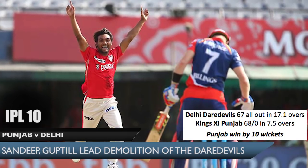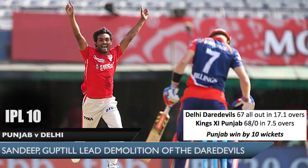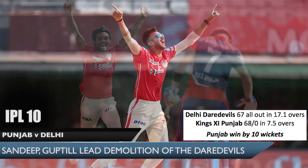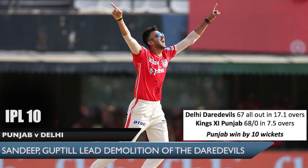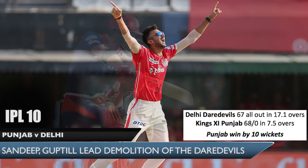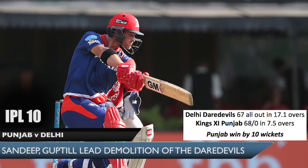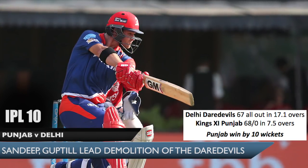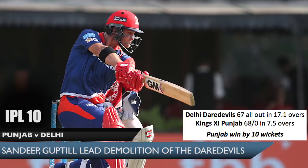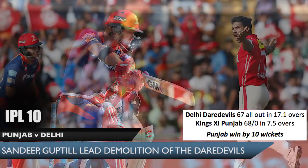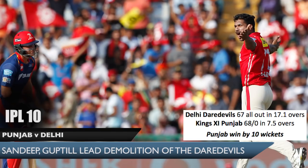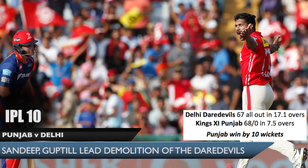Sandeep Sharma set the ball rolling for Punjab with 3 wickets within the first 5 overs. Akshar Patel chipped in with 2 valuable wickets as Delhi was 6 down at the half-face stage. Only 3 Delhi batsmen crossed 10, with Corey Anderson topscoring with 18 from 25 balls. The damage had been done and Varun Arun cashed in with 2 wickets in 2 overs at the end.